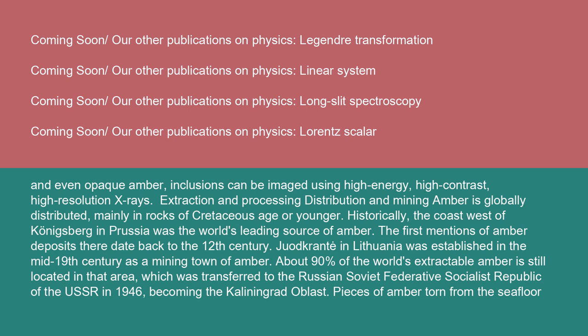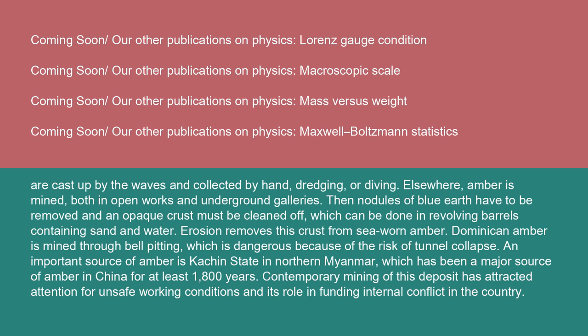Extraction and processing: Amber is globally distributed, mainly in rocks of Cretaceous age or younger. Historically, the coast west of Königsberg in Prussia was the world's leading source of amber. The first mentions of amber deposits there date back to the 12th century. Jantarny in Lithuania was established in the mid-19th century as a mining town of amber. About 90% of the world's extractable amber is still located in that area, which was transferred to the Russian Soviet Federative Socialist Republic of the USSR in 1946, becoming the Kaliningrad Oblast. Pieces of amber torn from the seafloor are cast up by the waves and collected by hand, dredging, or diving. Elsewhere, amber is mined, both in open works and underground galleries. Nodules of blue earth have to be removed, and an opaque crust must be cleaned off, which can be done in revolving barrels containing sand and water. Erosion removes this crust from sea-worn amber.